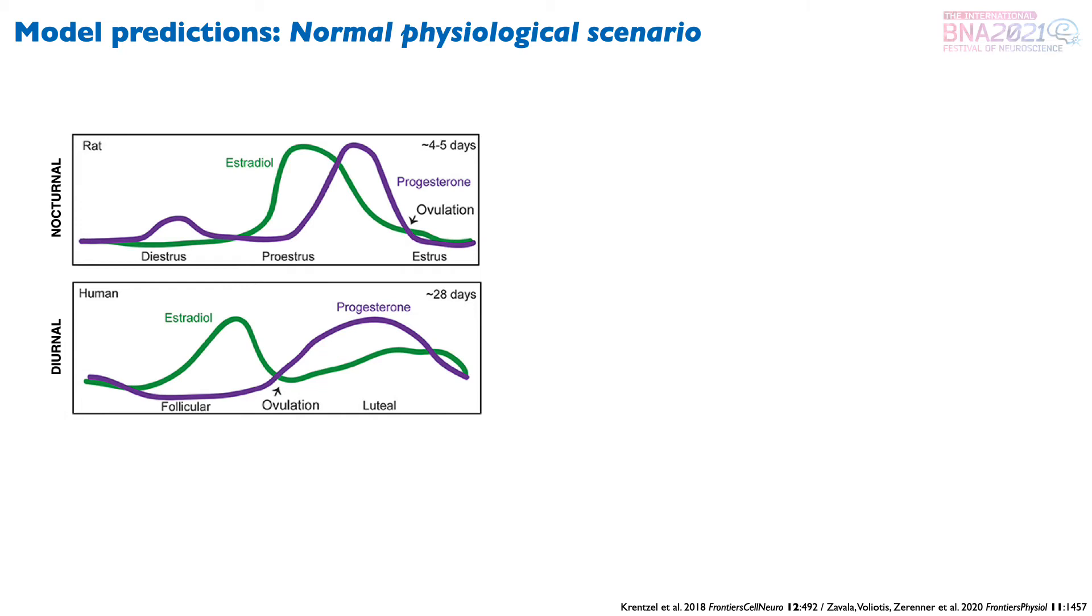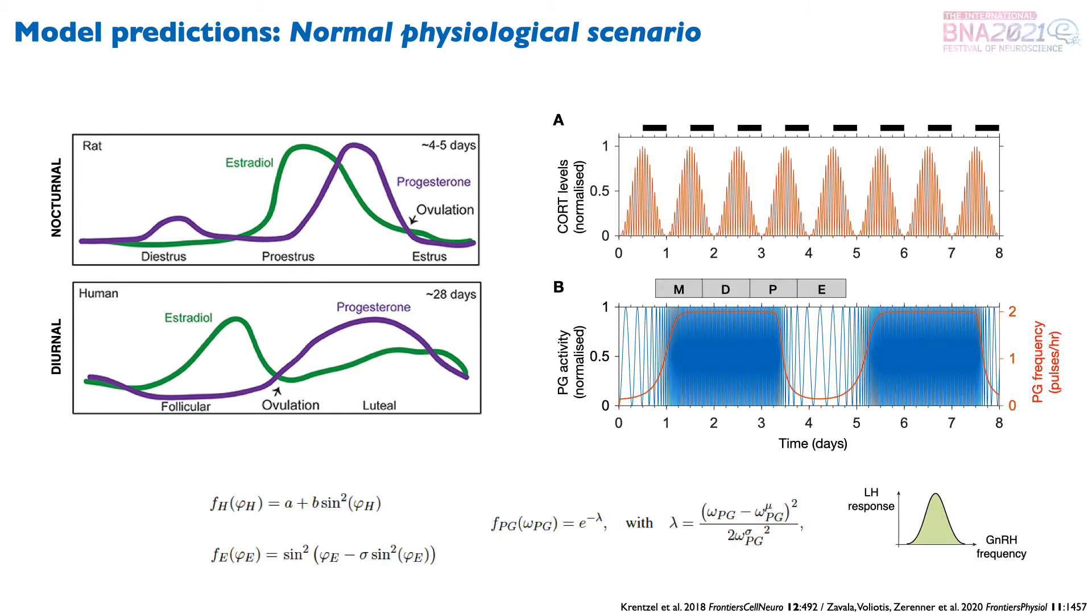We started by simulating normal physiological rhythms in the rat. Before showing you the results, here is just a reminder of the differences between rats and humans. Not only rats are nocturnal animals and have an estrous cycle lasting between four to five days, but also their sex hormone dynamics is slightly different. So we focused our analysis around experiments in the rat and used the model to reproduce the circadian and ultradian rhythms of cortisol, as well as the pulse generator activity.